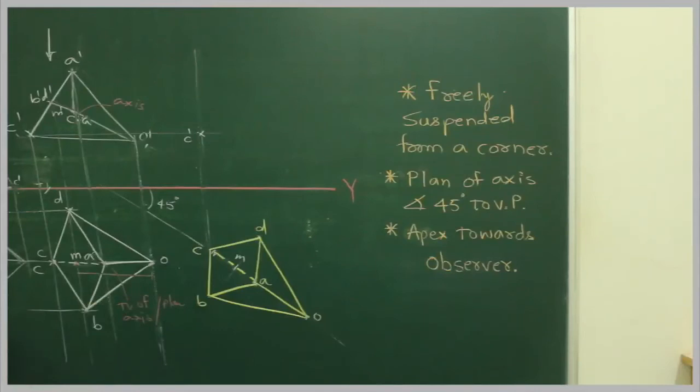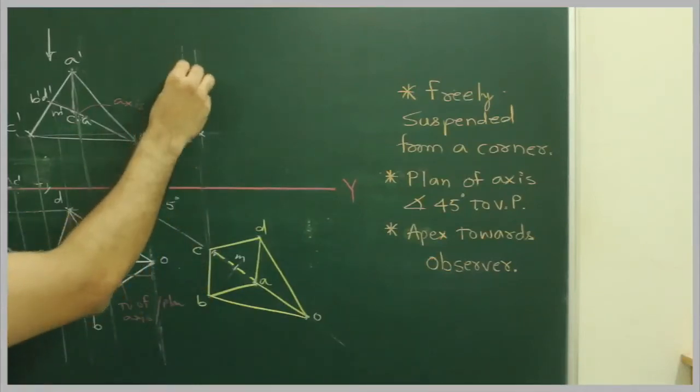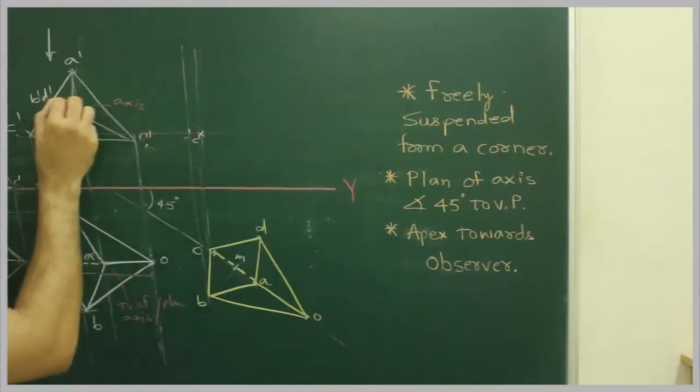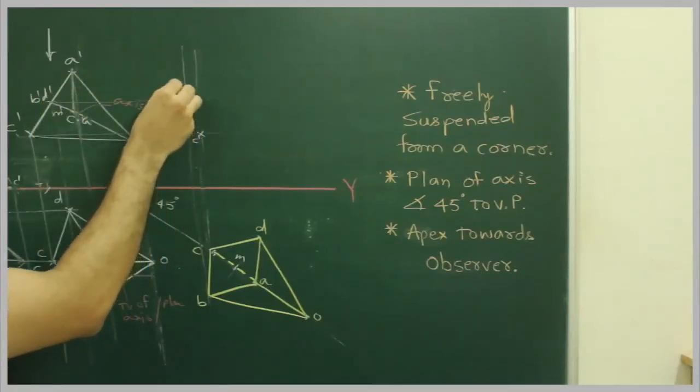Then you extend point B from here, extend B from here, we get B dash.